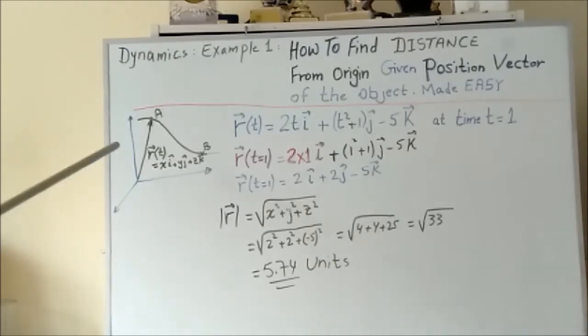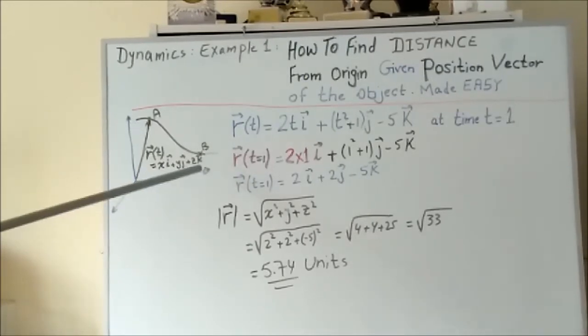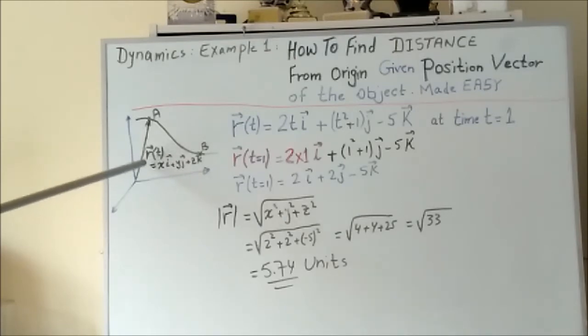As we can see in this graph here, it's described by the symbol r(t), the position of point A at any time t. This equals xi + yj + zk, so these are the coordinates in the x, y, and z directions.